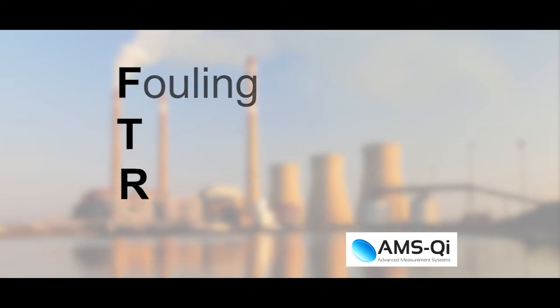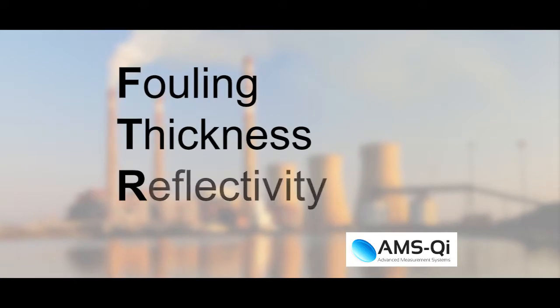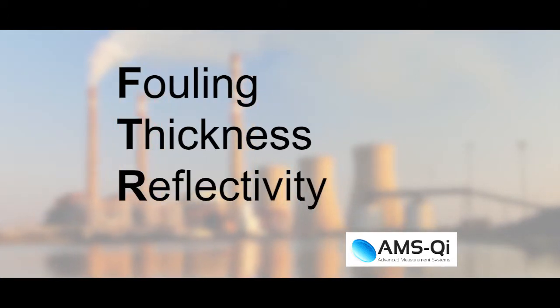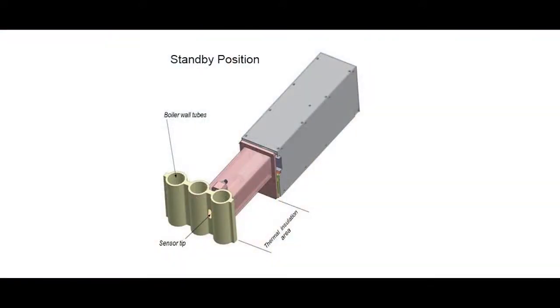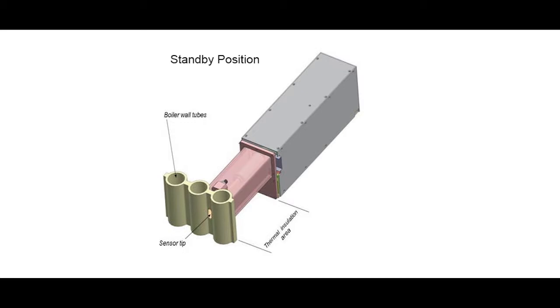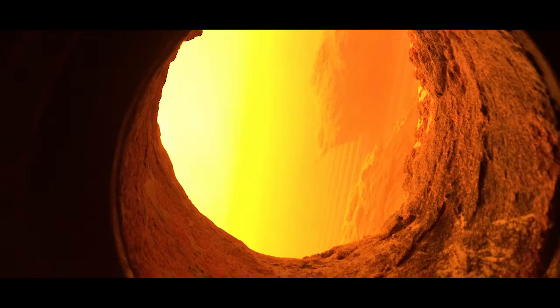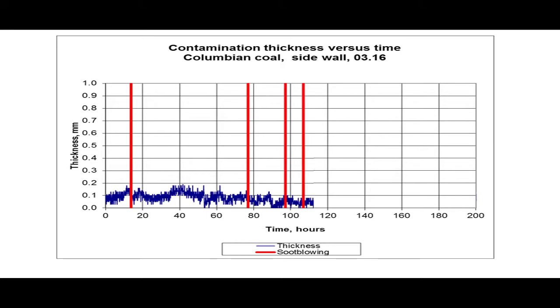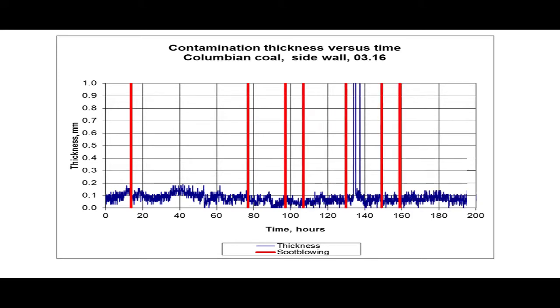The FTR is a fouling thickness and reflectivity measurement and control system for coal and biomass boiler applications. It provides non-contact direct measurement of thickness and reflectivity of deposits which build up on the water tube walls inside the furnace. The measurements are performed in real time and are immediately followed by calculations of optimal cleaning sequences which are then automatically activated as needed.